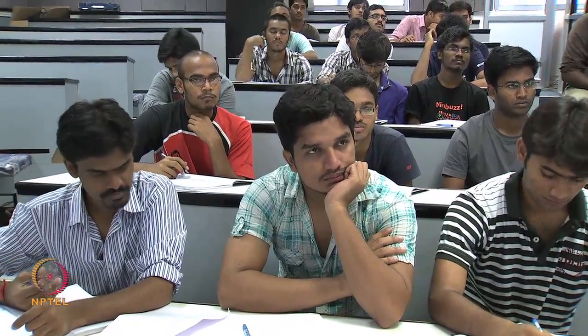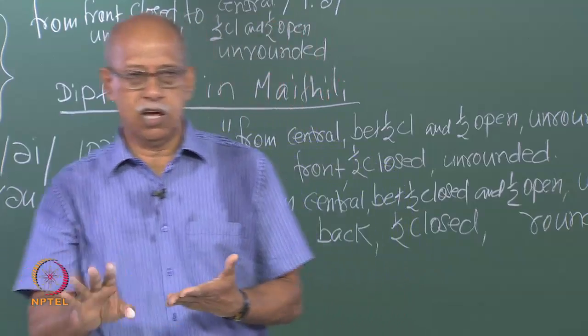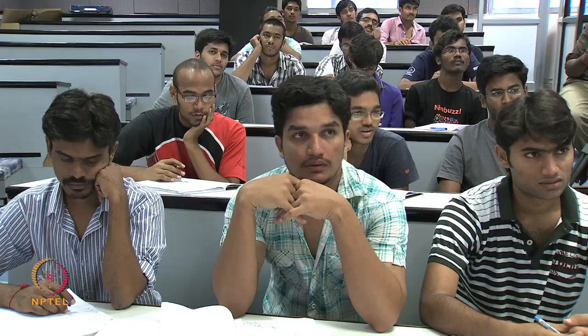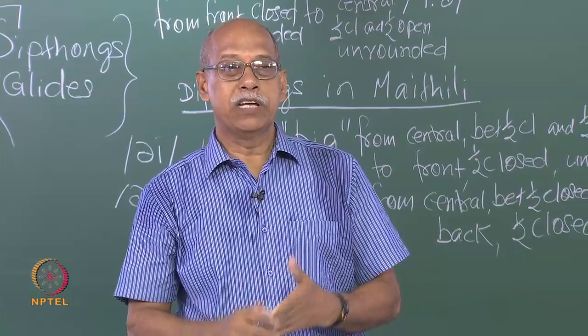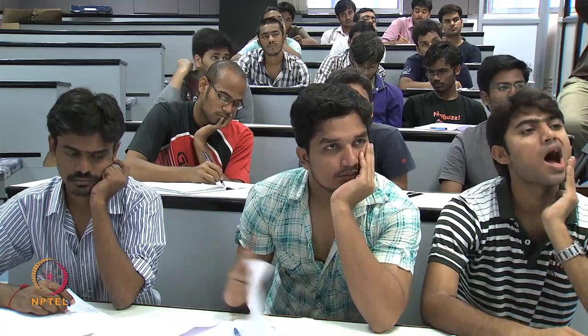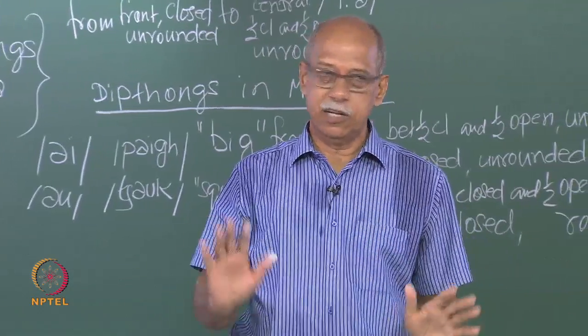Any problem understanding how vowel sounds are produced? Four things I have told you in the last three days: number one, what are vowels; how do we describe them — with respect to three parameters: front or back, closed or open, rounded or unrounded; how many kinds of vowels — monophthongs and diphthongs or pure vowels and glides; and how do we describe them — with reference to three term levels. No problems? Great. You are very generous.